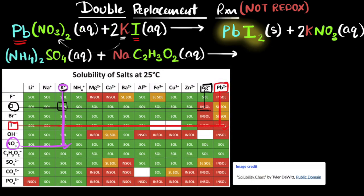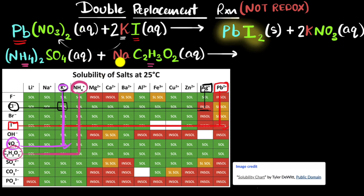Let's try another one. This one looks a little intimidating, but the idea is the same. We start by thinking about the potential products — we swap the cations. Ammonium cation combines with acetate ion. Checking the chart: ammonium and acetate — that is soluble. The other product would be sodium and sulfate ions. Sodium and sulfate — that's also soluble. Nothing is insoluble, so nothing precipitates out. We'll just end up with a solution where all four kinds of ions are present. So we get no reaction.